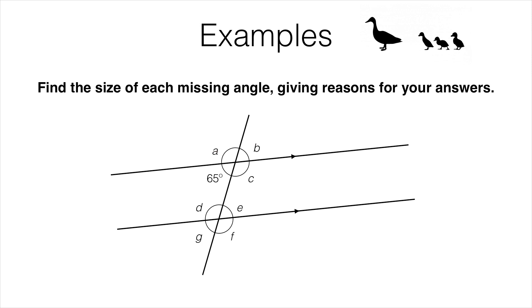The third thing you need to know about from lesson G3A is vertically opposite angles, so A and C would be the same because they are vertically opposite.